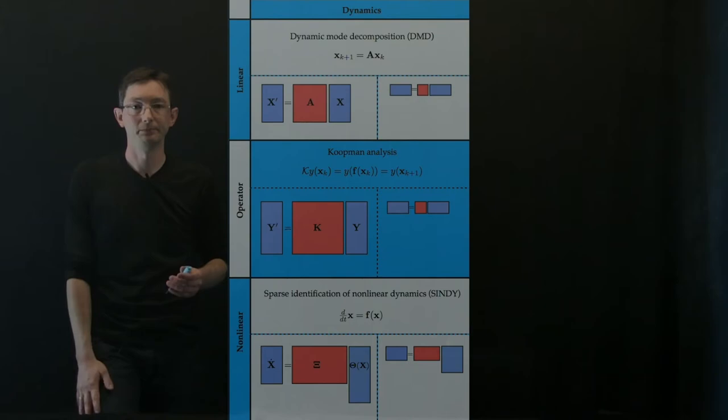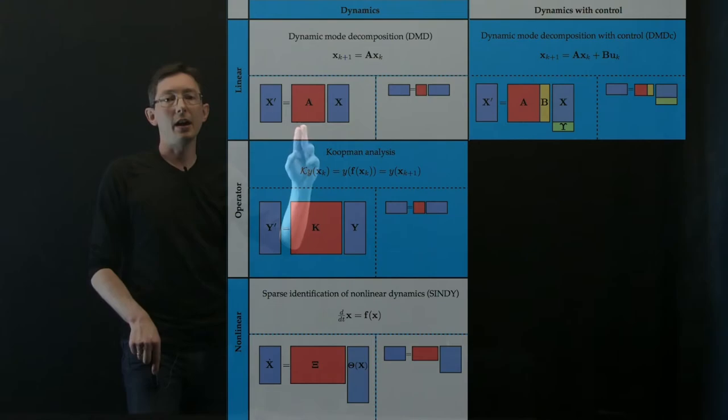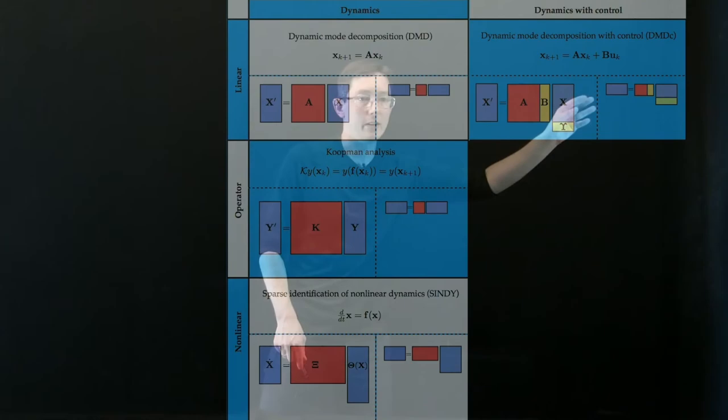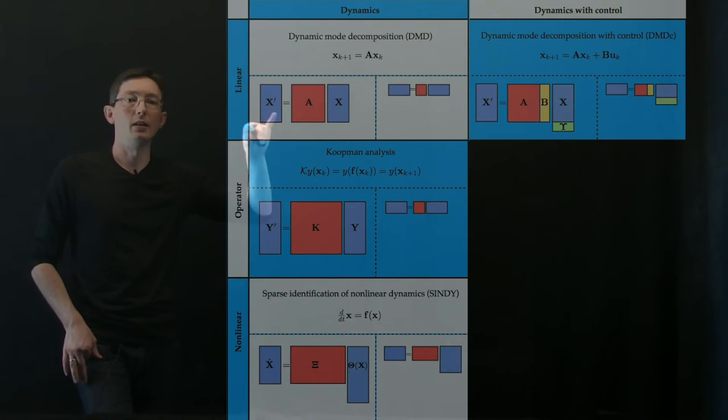And so what we're talking about now is extending all of these methods to include actuation and control, so A plus BU. And so here, you can see now in the right, this DMD with control, if I not only had x prime and x, but I also had this green epsilon over here, then I could simultaneously identify A and B matrices that get this actuated dynamical system. So this is very useful.